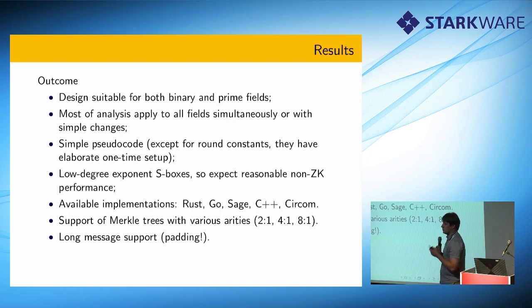We have simple pseudo code, we have simple regular code. We already have low degree exponents, so we expect good performance in fast languages like C, C++. We have already a number of implementations available. There are people who coded Poseidon in Rust for bulletproofs and there are other applications, so there are implementations in Go, Sage, C++, Circom. We support Merkle trees of different arities. If you really want to have fewer layers in your Merkle trees, we can do that. We can give you a Merkle tree with arity 4, with arity 8, as many as you want. We support long messages with proper padding.